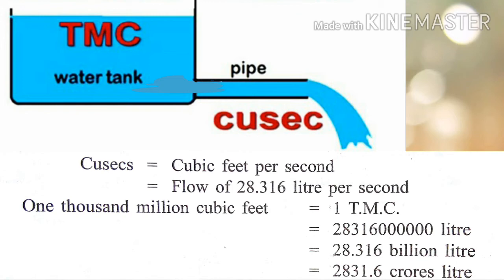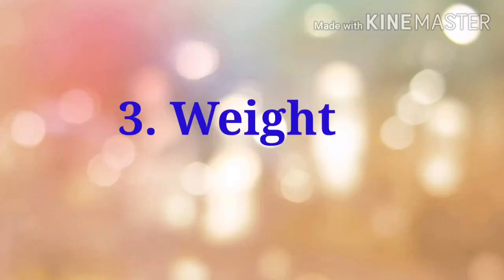As seen in the picture, the quantity of stored water is measured in TMC and the flow of water through the pipe is measured in Qsec. So what is TMC? 1 TMC equals 1000 million Qsec, which is equal to 28.316 billion liters.